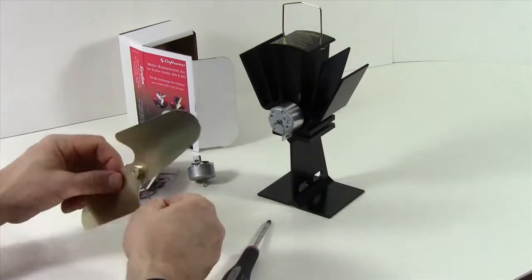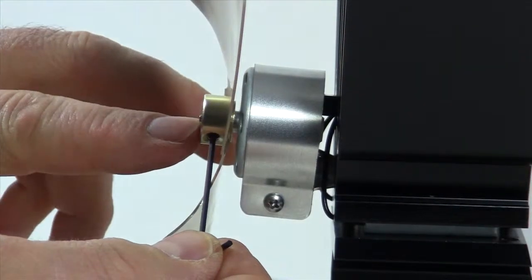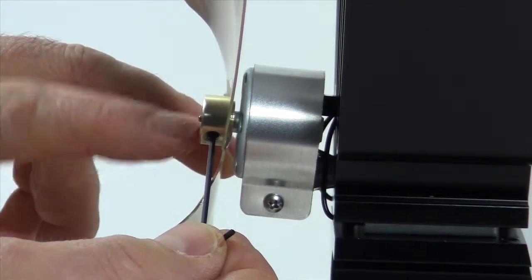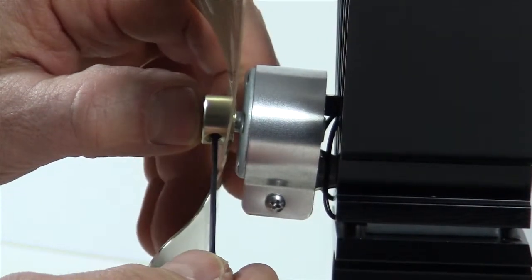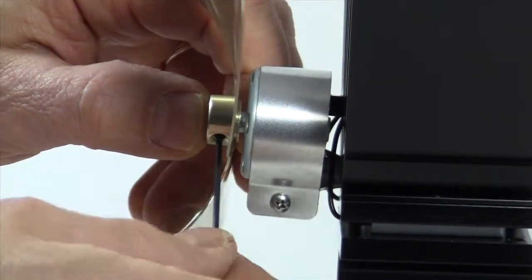And the last step will be to replace the blade. Now we want to make sure that the motor shaft is flush with the front of the blade. Turn the screw clockwise to tighten the blade.